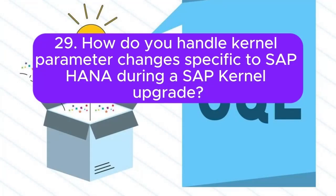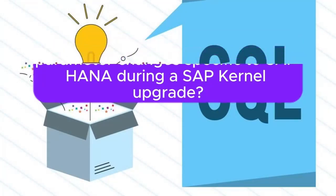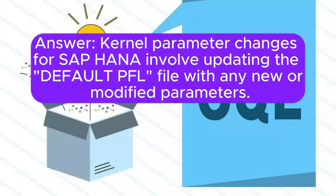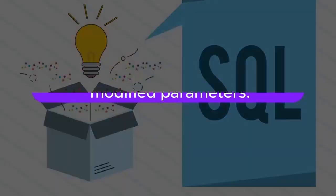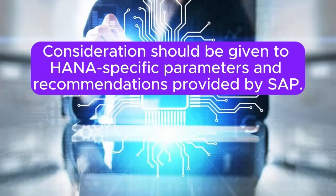29. How do you handle kernel parameter changes specific to SAP HANA during a SAP kernel upgrade? Kernel parameter changes for SAP HANA involve updating the default.pfl file with any new or modified parameters. Consideration should be given to HANA-specific parameters and recommendations provided by SAP.